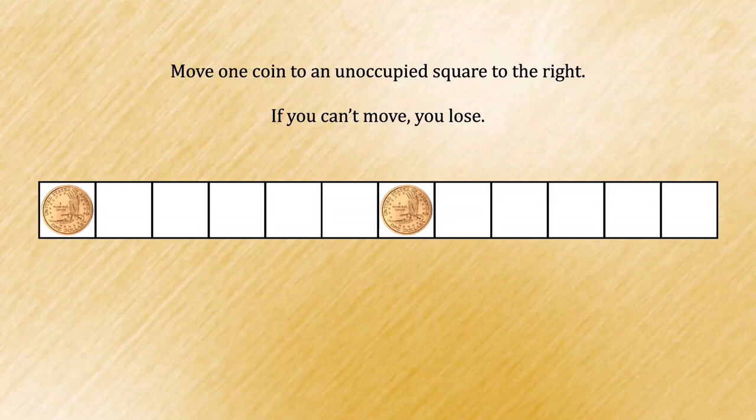For example, you could begin the game by moving the leftmost coin two spaces. On my turn, I might move that coin all the way down here. On your turn, you could move it another space.